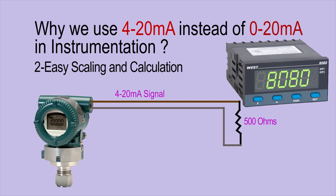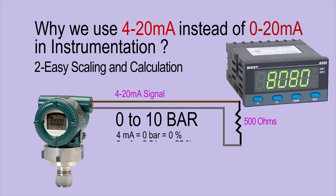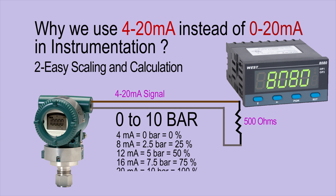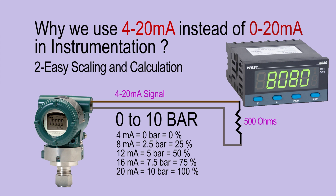Reason number two is easy scaling and calculation. For example, using a 0 to 10 bar pressure transmitter, it is very easy to scale 0 to 10 bar across the 4 to 20 milliamp signal. At 4 milliamps the pressure is 0 bar, which is 0% of the output. At 8 milliamps the pressure is 2.5 bar, about 25% of the transducer signal. At 20 milliamps the pressure is 10 bar, which is 100% of the transmitter output signal.